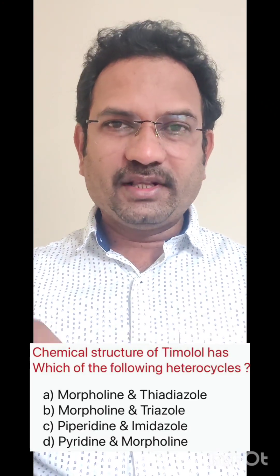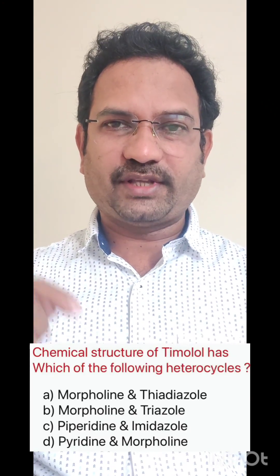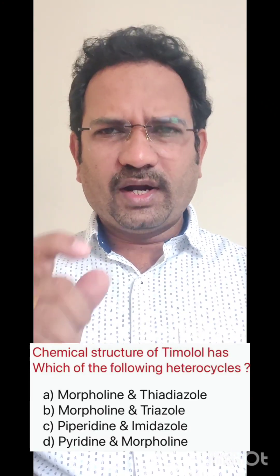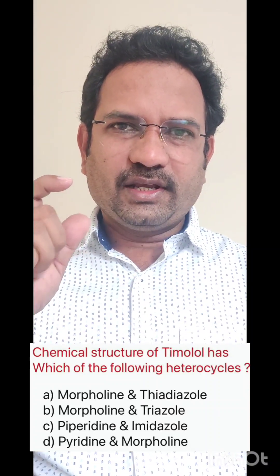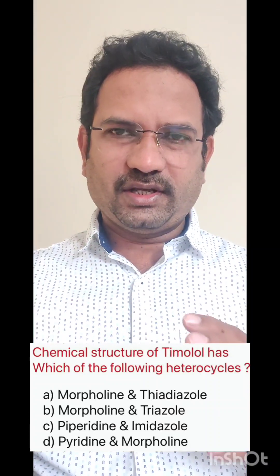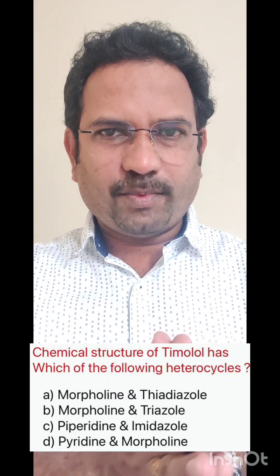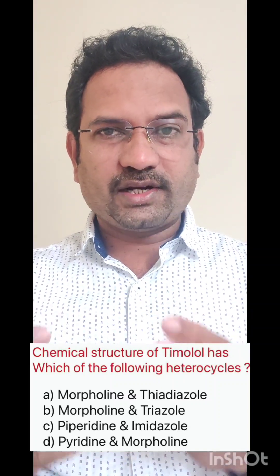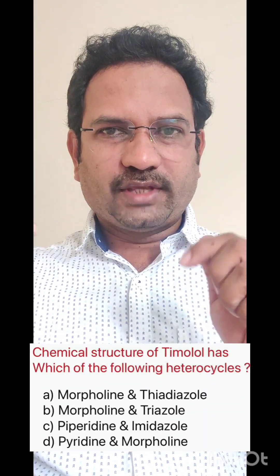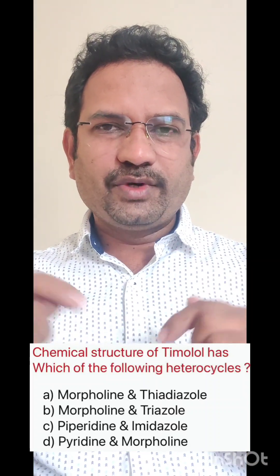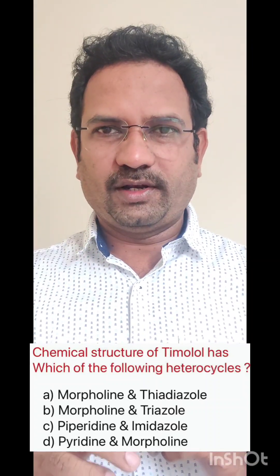The first question is: the chemical structure of timolol has which of the following heterocycles? Now understand how the questions are being tested. In a structure, they will either check a particular functional group or they will ask regarding heterocyclic rings. So the question is: you need to find out what heterocycles are present in timolol.